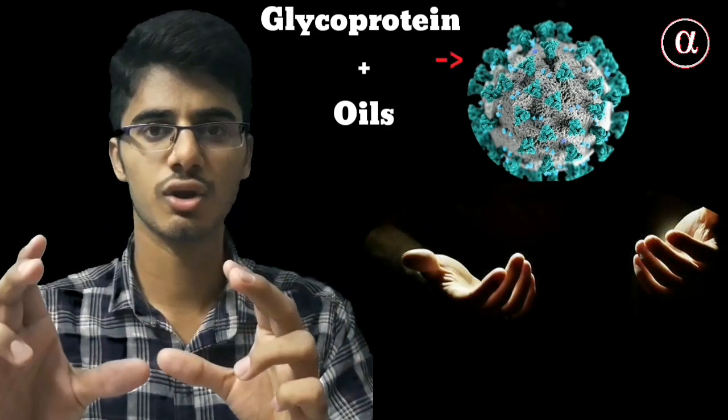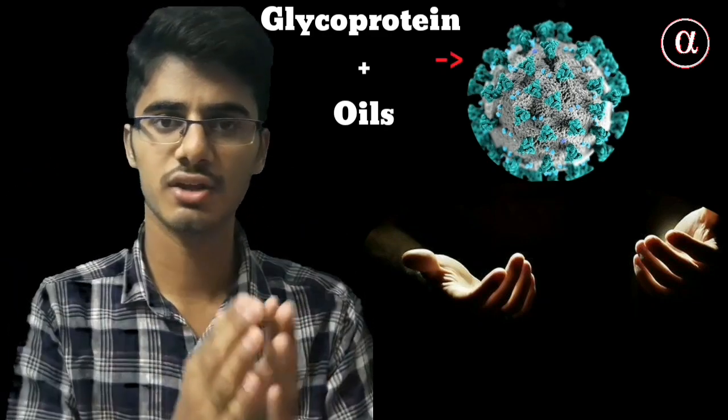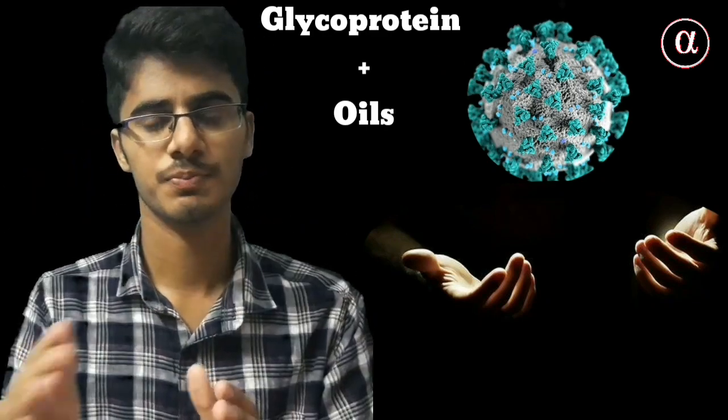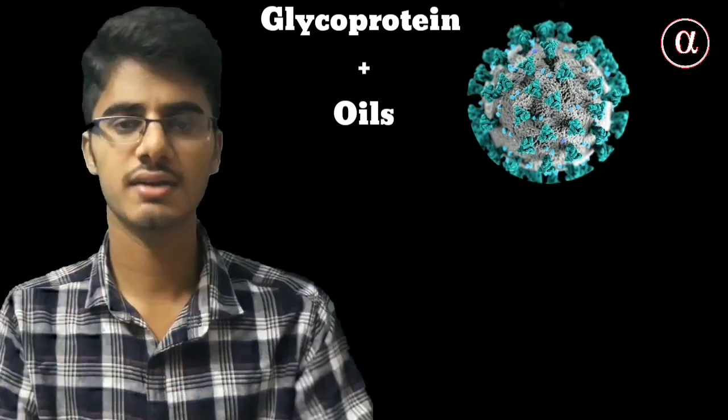When we use soap or hand sanitizer on our hands, the hydrophobic part of the soap is attracted to the lipoproteins and glycoproteins of the coronavirus envelope — it binds to the outer lipid region of the virus. The hydrophilic end then faces outward toward the water. When we rinse with water, the virus is pulled apart and destroyed. This process takes about 20 seconds, which is why we must wash hands for 20 seconds to destroy the coronavirus.